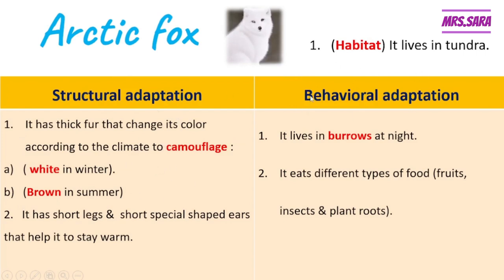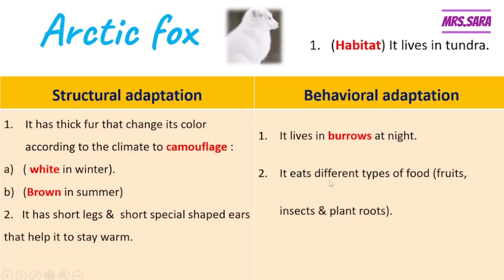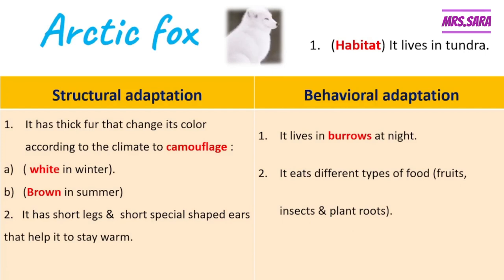The behavioral adaptation of the arctic fox is that it lives in burrows, like the fennec fox, at night to keep its body warm against the cold climate. It also eats different types of food — fruit, insects, and plant roots — just like the fennec fox. So the behavioral adaptations of the fennec fox and the arctic fox are similar: they both live in burrows and eat different types of food.